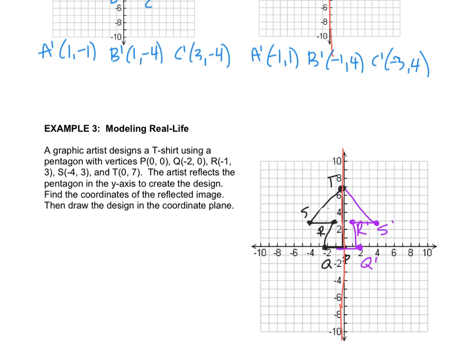So we drew the design. We have to find the coordinates of the reflected image. So I'm going to put P and T, they're the same. So P is still (0, 0), Q prime is now at (2, 0), R prime is at (2, 3), S prime is at (4, 3), and T didn't move, it's still at (0, 7).